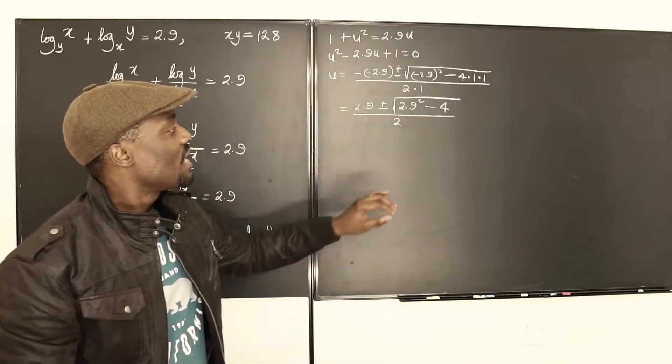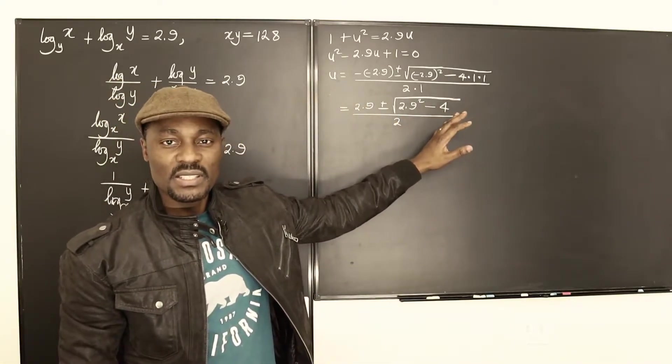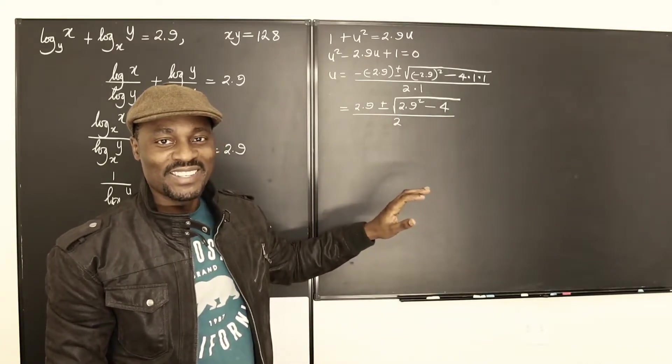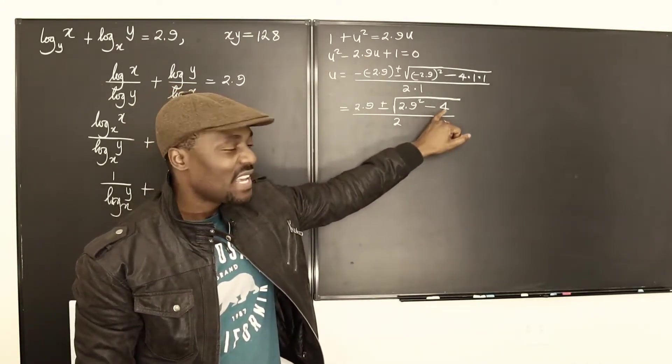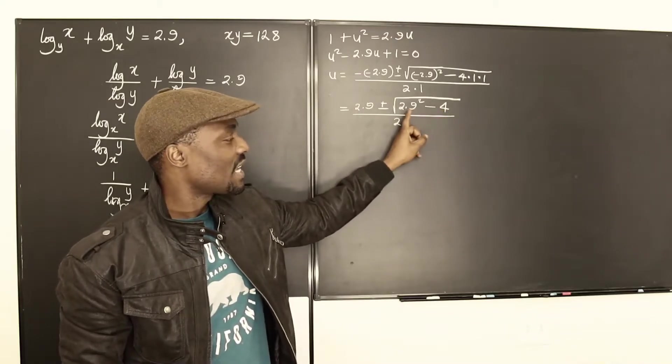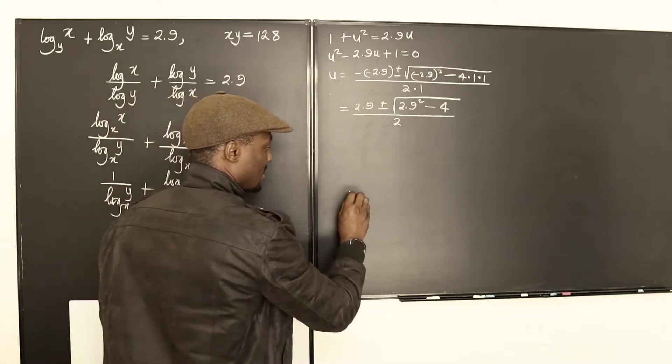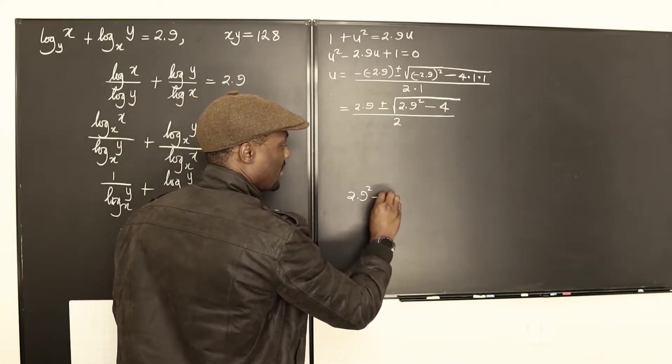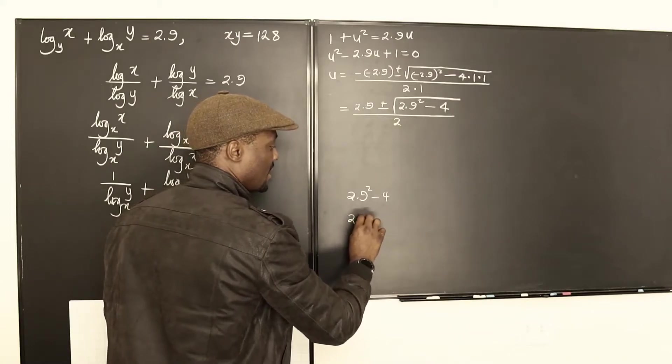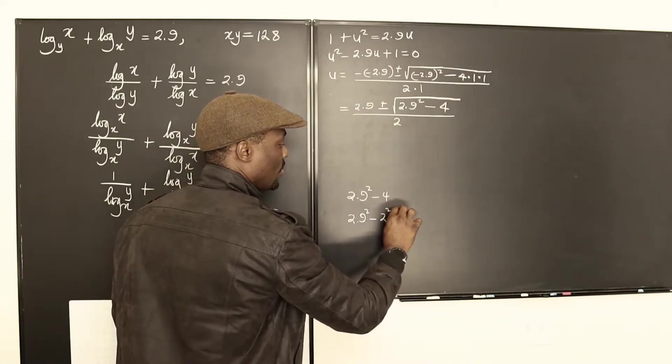So the good thing is, if you have a calculator, you can punch it out. But I don't have a calculator. So I'm just going to do it mentally. 4 is 2 squared. So this looks like difference of 2 squares. Let me just do the work here. Look at this. 2.9 squared minus 4 can be written as 2.9 squared minus 2 squared. Now, this is difference of 2 squares.